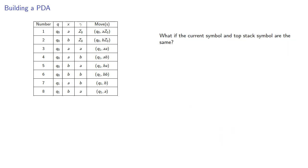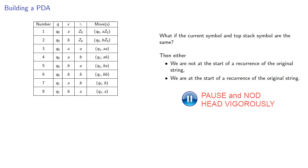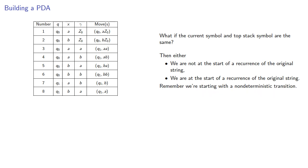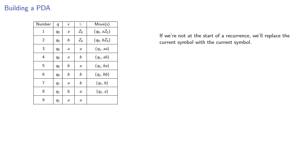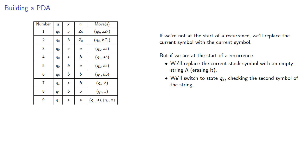What if the current symbol and the top stack symbol are the same? Then either we are not at the start of a recurrence of the original string, or we are at the start of a recurrence. Remember we're starting with a non-deterministic transition, so we can assume our pushdown automaton knows which scenario applies. If we're not at the start of a recurrence, we'll replace the current symbol with the current symbol. But if we are at the start, we'll replace the current stack symbol with an empty string lambda, effectively erasing it, and switch to state q2, checking the next symbol.